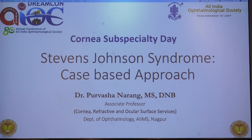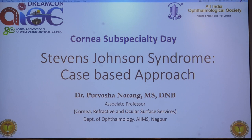Now quickly moving to Stevens-Johnson syndrome: SJS along with toxic epidermal necrolysis — the most severe form — is a spectrum of severe immune-mediated vesiculobullous mucocutaneous disease. It may affect children as well as adults. It is broadly characterized into an acute phase and a chronic phase, each with characteristic clinical features, presentation, management, and prognosis. In the acute phases you may be treating the patient in the burn ICU along with dermatologists, while in the chronic phase the patient may come independently to your OPD.